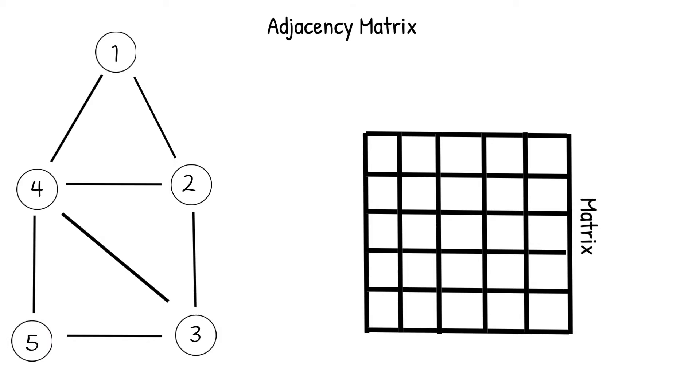Now how do we represent this on our matrix? To begin, we will need to label the columns and rows of our matrix with the number of nodes. The size of the adjacent matrix in this case will always be n by n, with n being the number of nodes. After we've labeled our columns and rows, we can then begin to fill in our matrix.